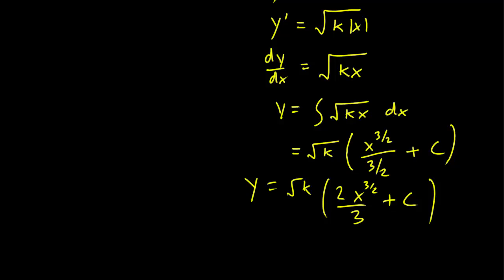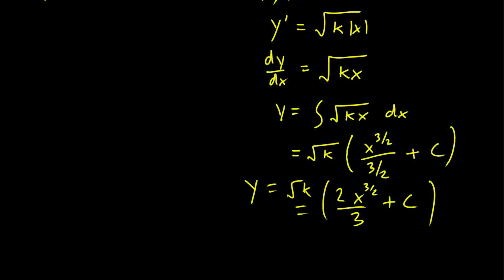So our general solution has two constants, k and c. But we should expect that since we started with a second order differential equation. And therefore we expect there to be two constants. And this is the general solution that we get.